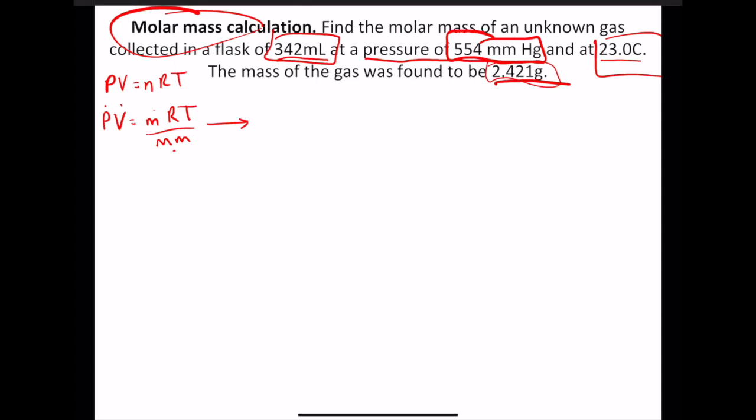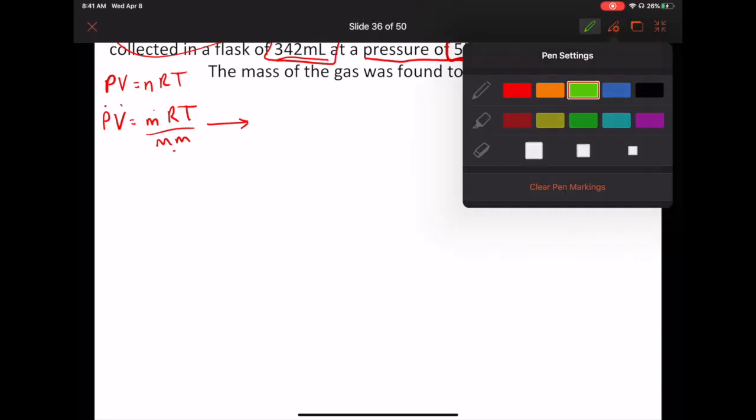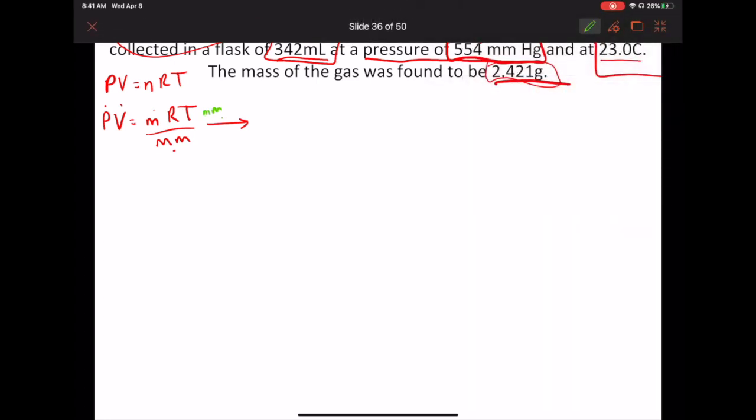All right. So mm is on the bottom. So we need to get that on the top. So I'm going to multiply both sides by mm. And that's molecular mass. So it cancels out over here and here. And then I need to get PV on the bottom. So I divide it on both sides. So that'll get rid of it over there. And then we have it now. So now our problem, our equations, is going to be molecular mass equals mRT over PV.